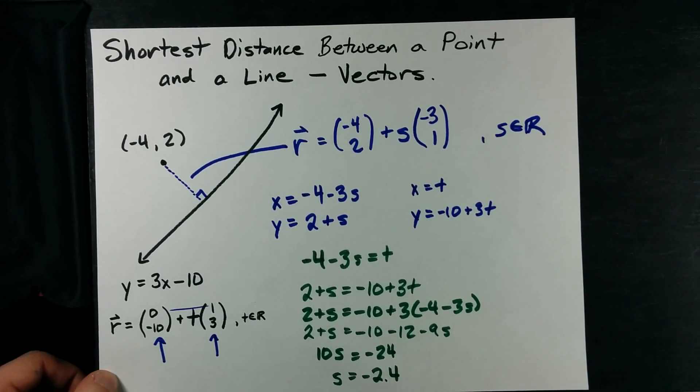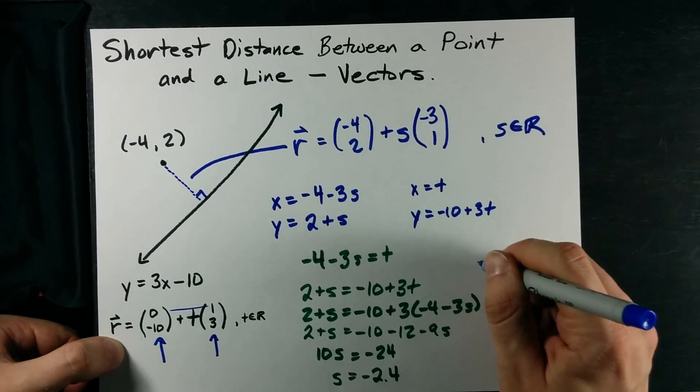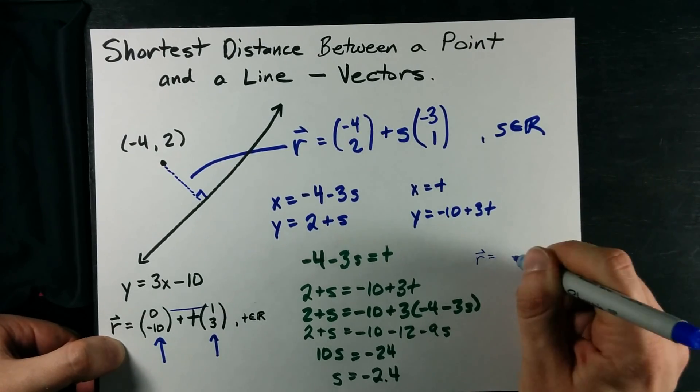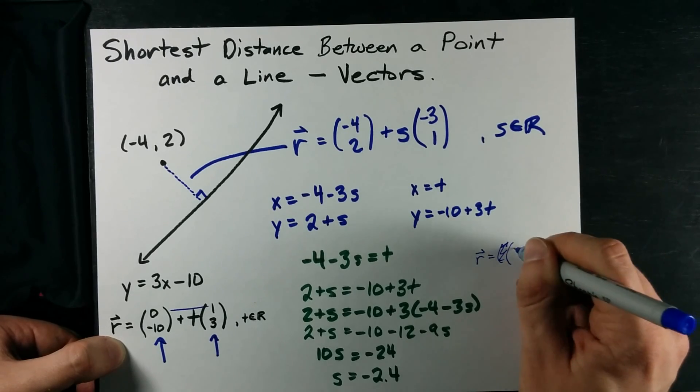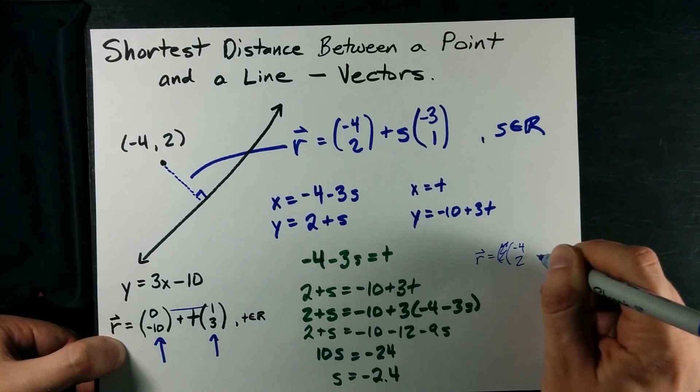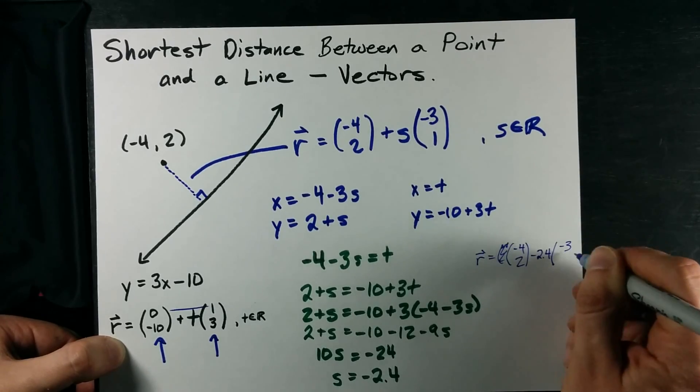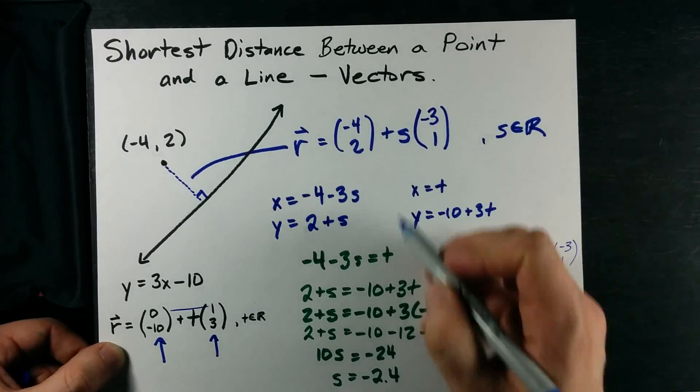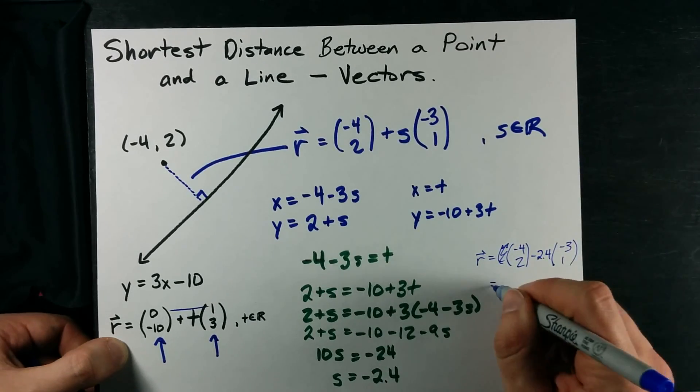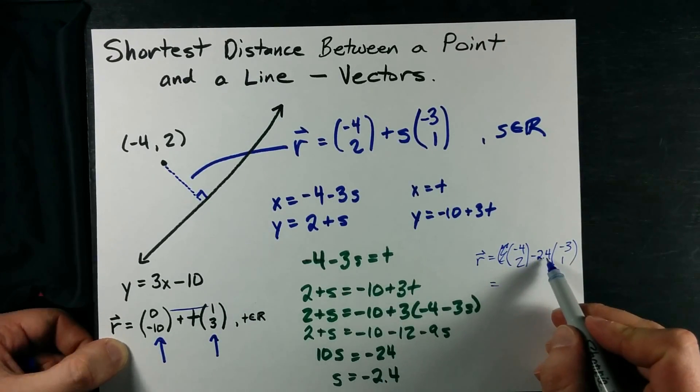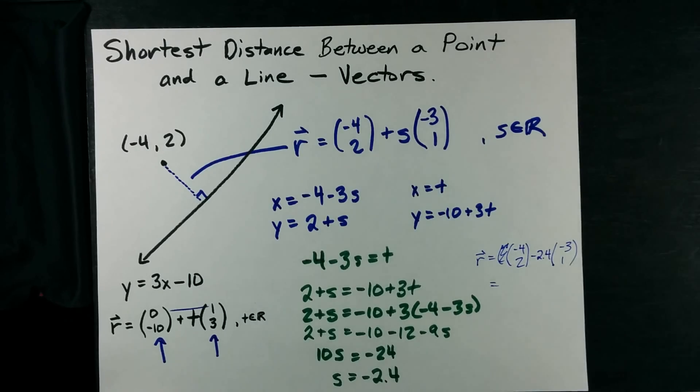Sweet. I got one parameter. What that means is I just need to plug that s in to get the coordinates of the point of intersection. It's negative 4, 2 minus 2.4, negative 3 ones. See how I plug negative 2.4 in for s. Negative 4 minus 2.4 times negative 3.